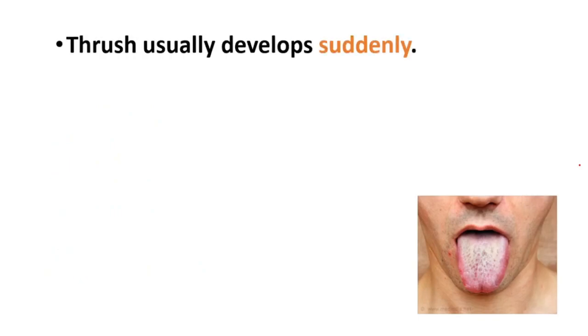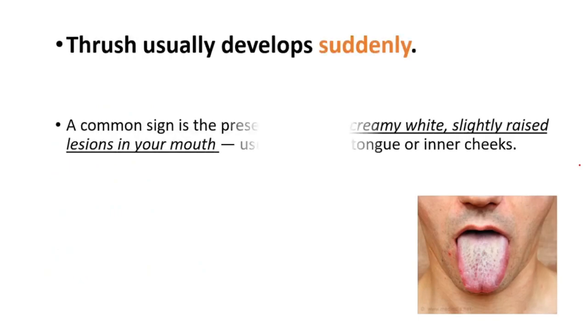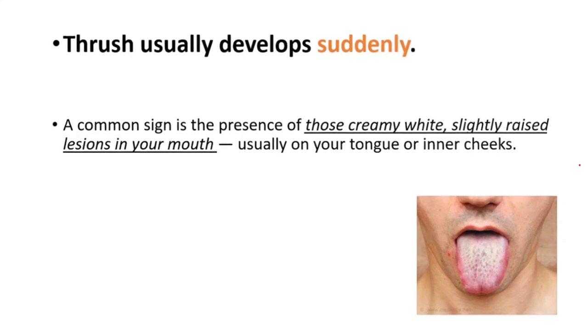Thrush usually develops suddenly. A common sign is the presence of creamy, white, slightly raised lesions in your mouth, usually on your tongue or inner cheeks.